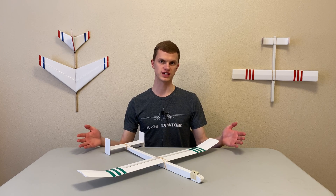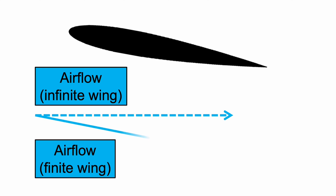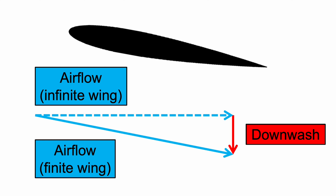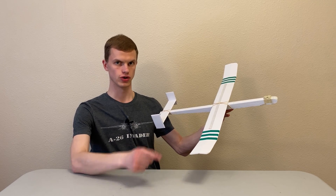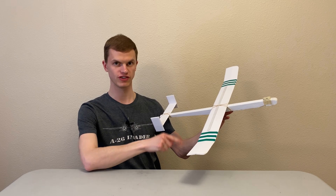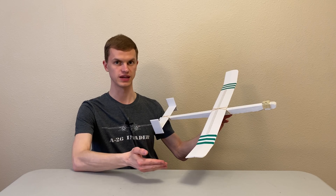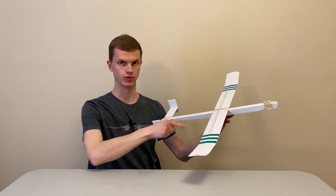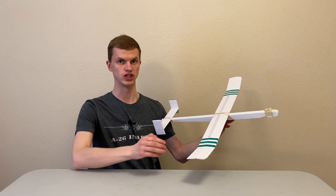Now that we know the detrimental effects of wingtip vortices, let's take a look at exactly how they happen. When we look at the airflow over the wing, we'll notice that the wingtip vortices redirect it downwards. The downwards component of the airflow added by the wingtip vortices is called downwash. This is a problem because redirecting the airflow downwards was supposed to have been the airfoil's job. Since the wingtip vortex is doing some of the work instead, there is less work for the airfoil to do, and therefore the equal and opposite upwards force on the wing is weaker.